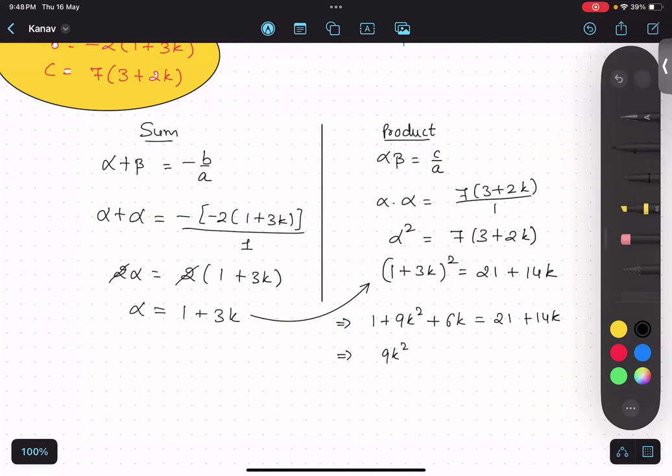9k square. And 6 minus 14k. So 1 minus 21, minus 20k equals to 0. I hope there is no silly mistake over there.